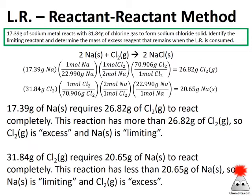On the limiting reactant side: 17.39 grams of sodium will react completely with 26.82 grams of chlorine. Looking at the problem, I have almost 32 grams of chlorine — I only need 26.82 to react with all the sodium, so I've got extra chlorine. That means sodium is the limiting reagent and chlorine is the excess reagent. Looking at it from the chlorine side: 31.84 grams of chlorine requires 20.65 grams of sodium, but I only have 17.39 grams — so I'll run out of sodium first, confirming it's the limiting reactant. Two parallel calculations, fortunately giving the same result.